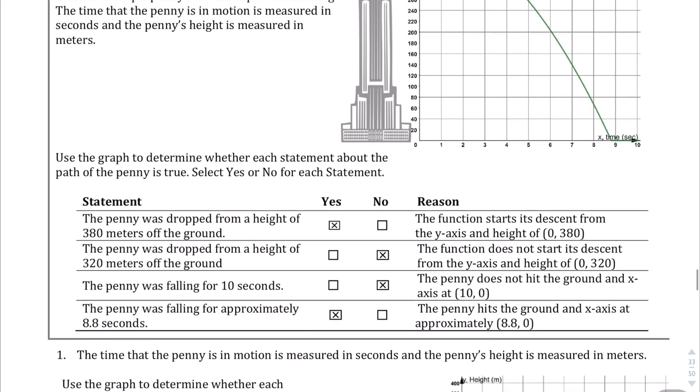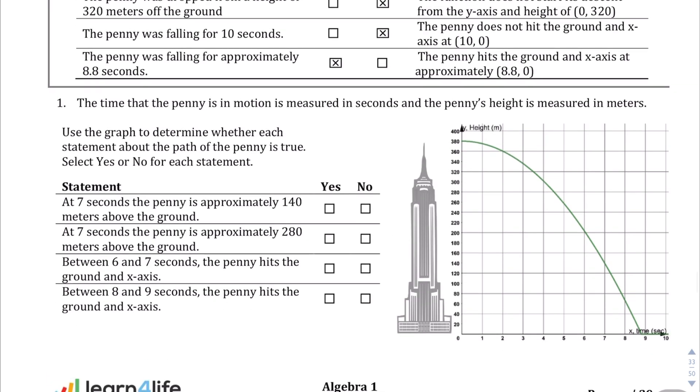Okay, so we're going to deal with statements here. We're just verifying whether or not these statements are true. Here we're apparently throwing a penny off of the Empire State Building, which is very dangerous by the way, so don't do that. We're told the time the penny's in motion is measured in seconds and the penny's height is measured in meters. The penny is getting thrown off and we're not even given a function here.